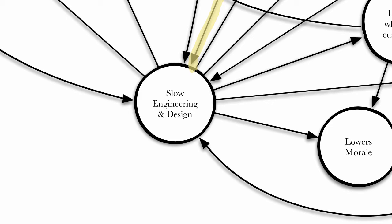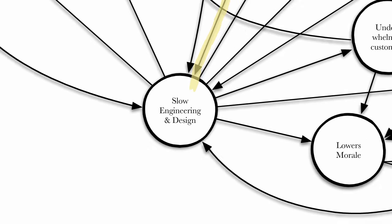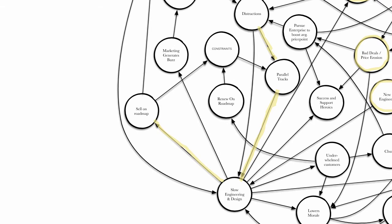But wait, I thought it was the bugs that were slowing them down. Or playing foosball all day. But we'll get to that. Let's take another route. As we slow down, we start selling on the roadmap. Which creates constraints.